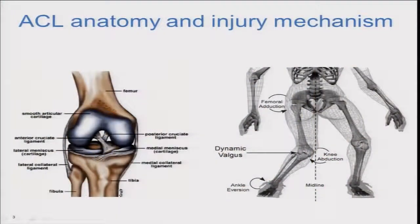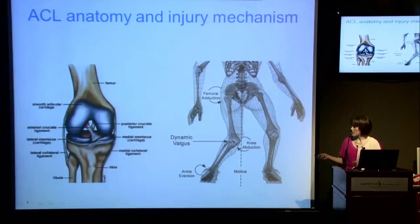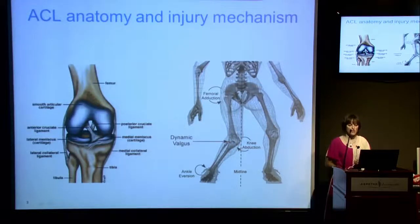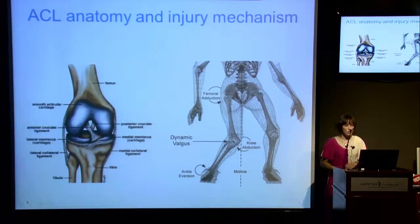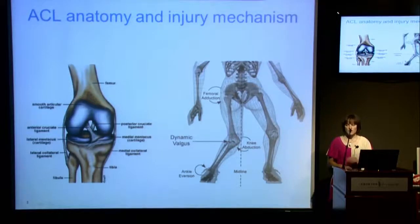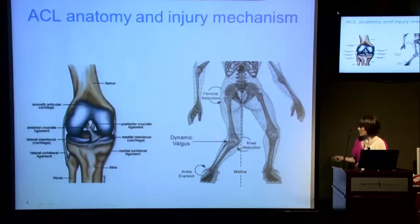For those less familiar with the ACL, this is the frontal plane view of the knee with the patella removed. The ligament we're talking about is one of the two intra-articular cruciate ligaments — the one that attaches to the anterior aspect of the tibia. The ACL is typically injured in a non-contact mechanism in about three quarters of cases, typically when the athlete is pivoting or changing direction on a flexed knee.